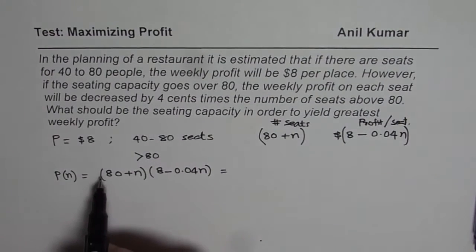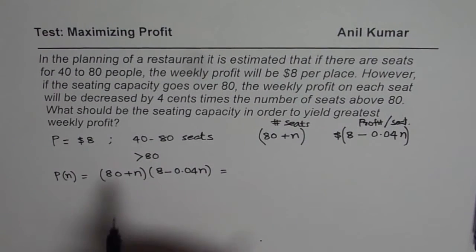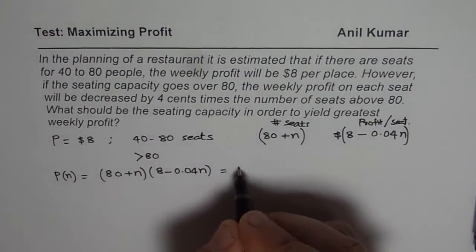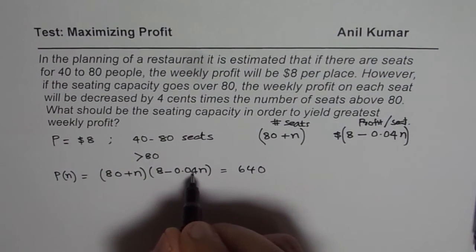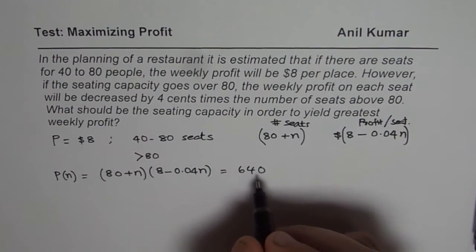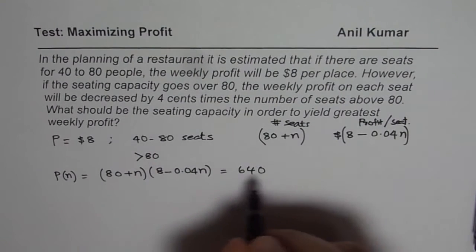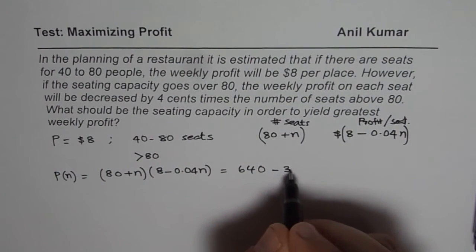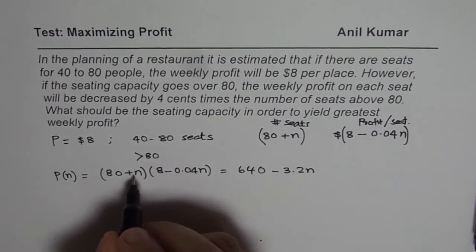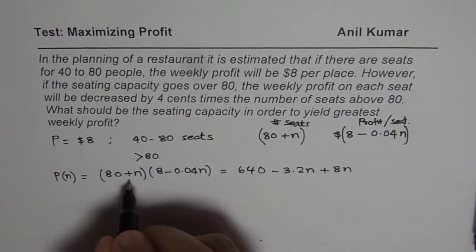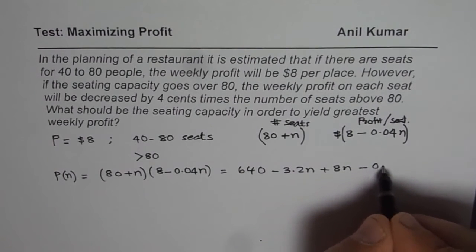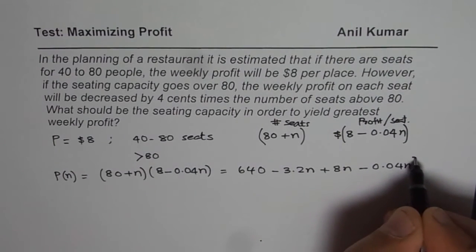So it is a good idea to expand and simplify this. So 8 times 80 is 640. And then we can multiply this by this. So two decimal places and one 3.2, that means 3.2 N, so we get minus 3.2 N. Now multiplying with N, we get plus 8 N.